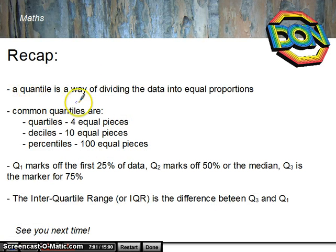So, a quantile is a way of dividing data into equal proportions. Common quantiles are quartiles, 4 equal pieces. Deciles, 10 equal pieces. Percentiles, 100 equal pieces. Q1 marks off the first 25%. Q2, the first 50%, or the median. Q3 is the marker for 75%. And the interquartile range is the difference between Q3 and Q1.